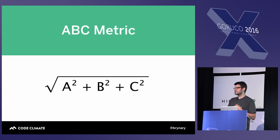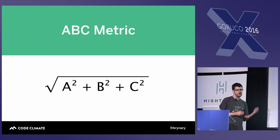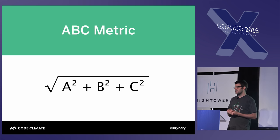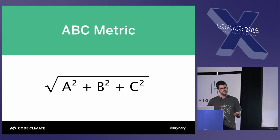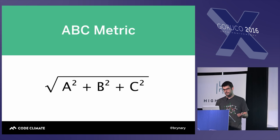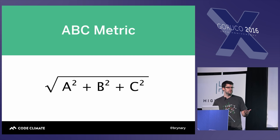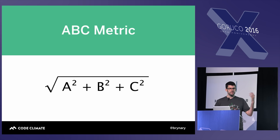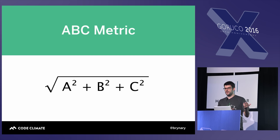However, if you tell a developer that the method they just wrote has an ABC metric of 47.3, that might be difficult for that developer to interpret. It's unclear if 47.3 is a low score or a high score. It's also unclear, importantly, what the developer would do to reduce that score. They might infer that by moving some code out of the method, one of those variables would be reduced and the overall score would decrease — which is true, but it's somewhat indirect.